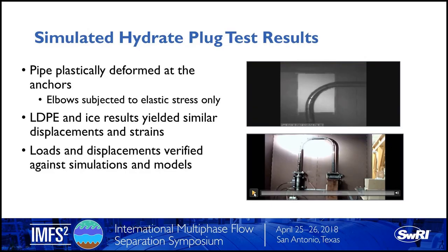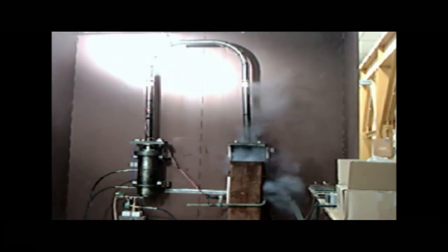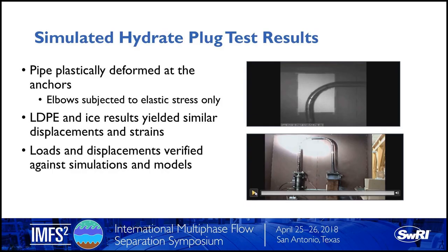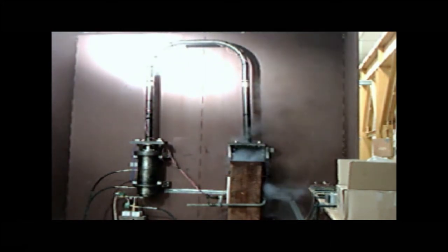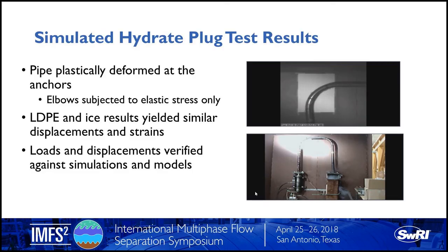The videos showing plug movement and pipe dynamics will be posted on YouTube for better viewing. The test showed that the risk of a plug shooting through an elbow was very low with supporting computations and mechanical models. However, it is important to note that the pipes did plastically deform at the anchors—if you're anchoring a line at points where loads are highest, you may fatigue your line over time.